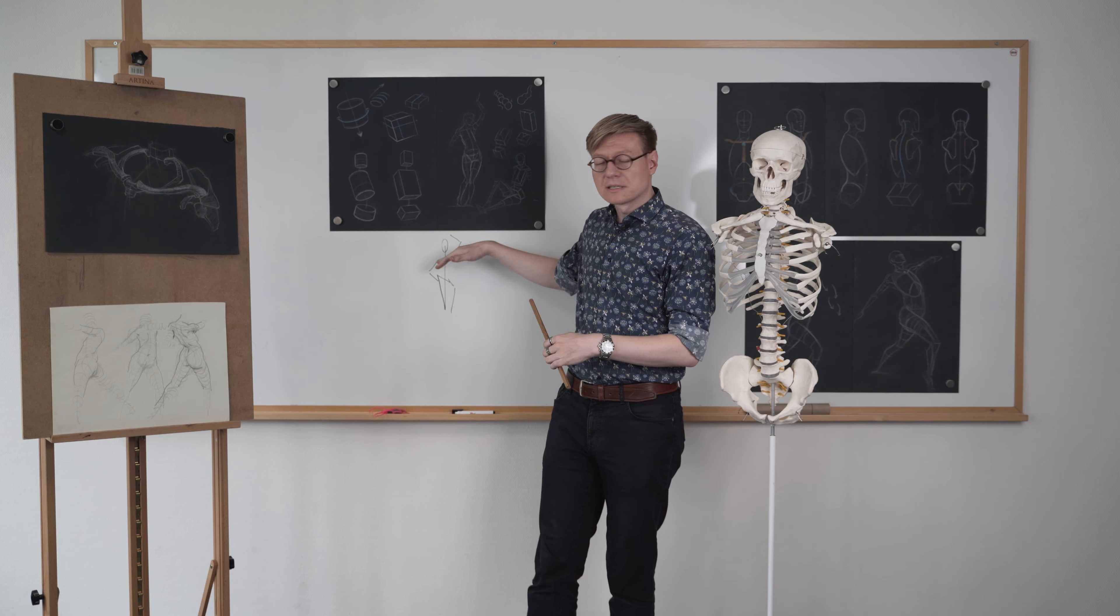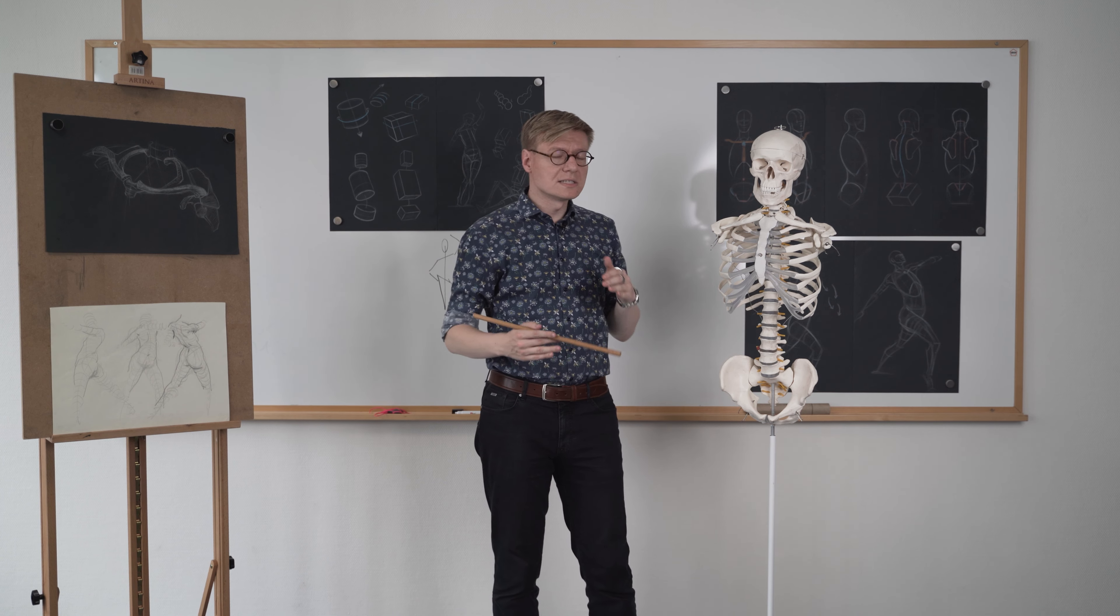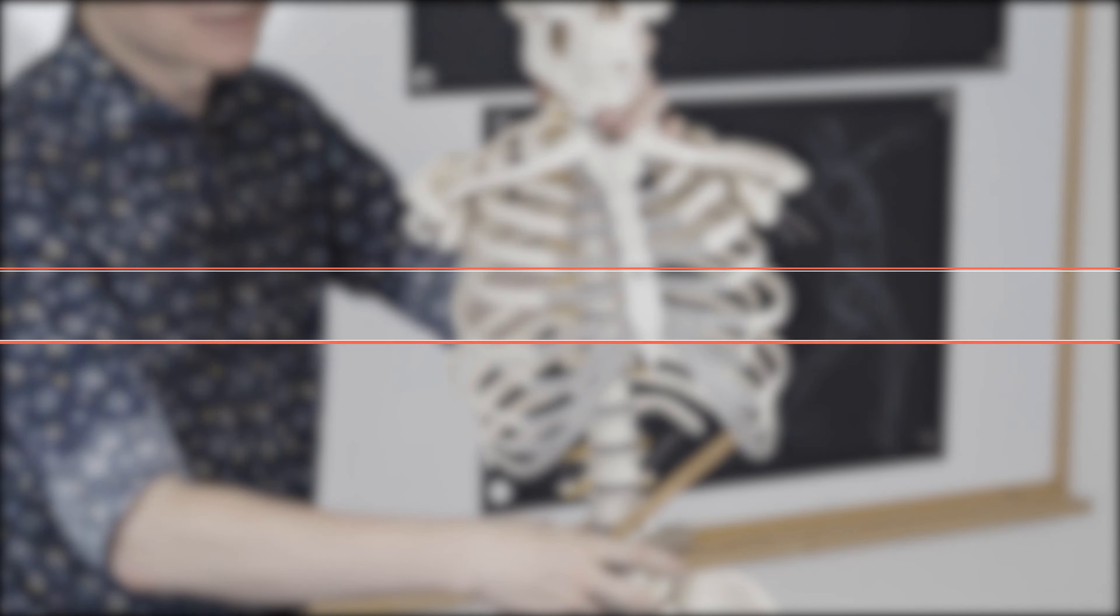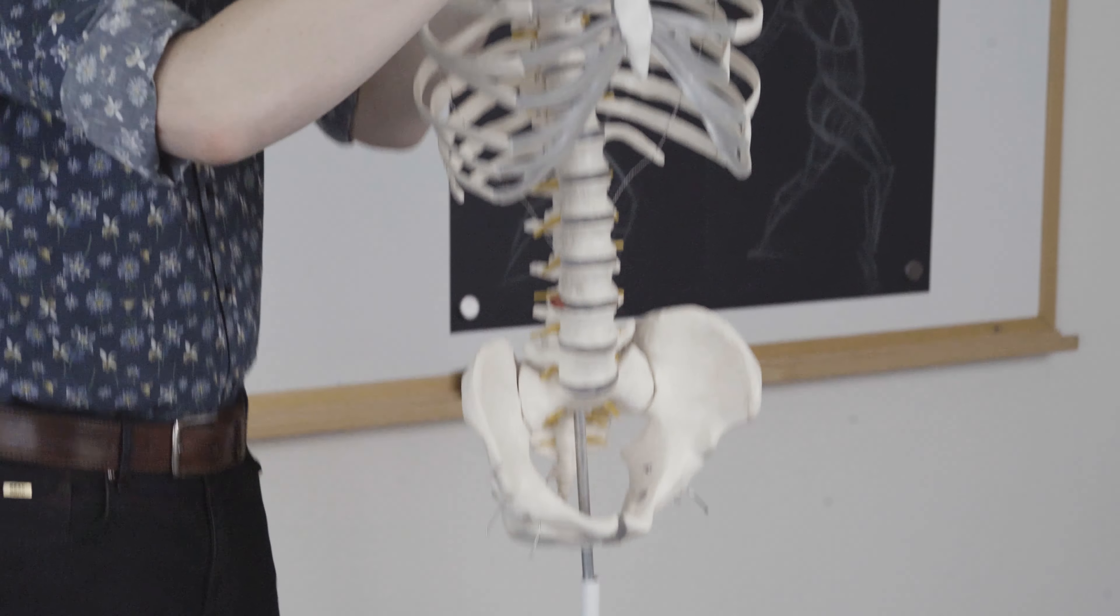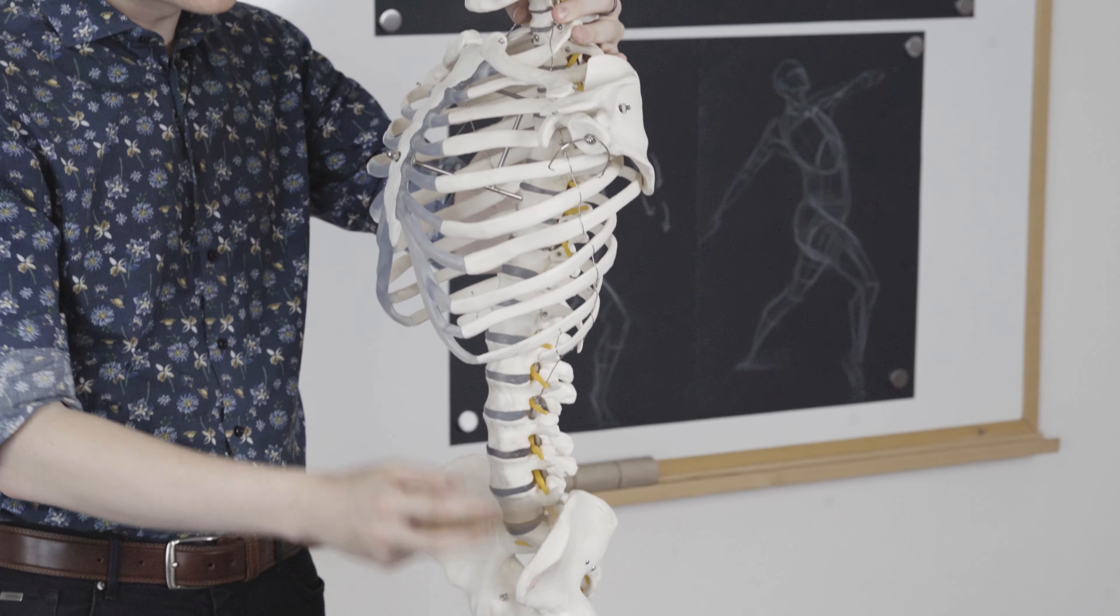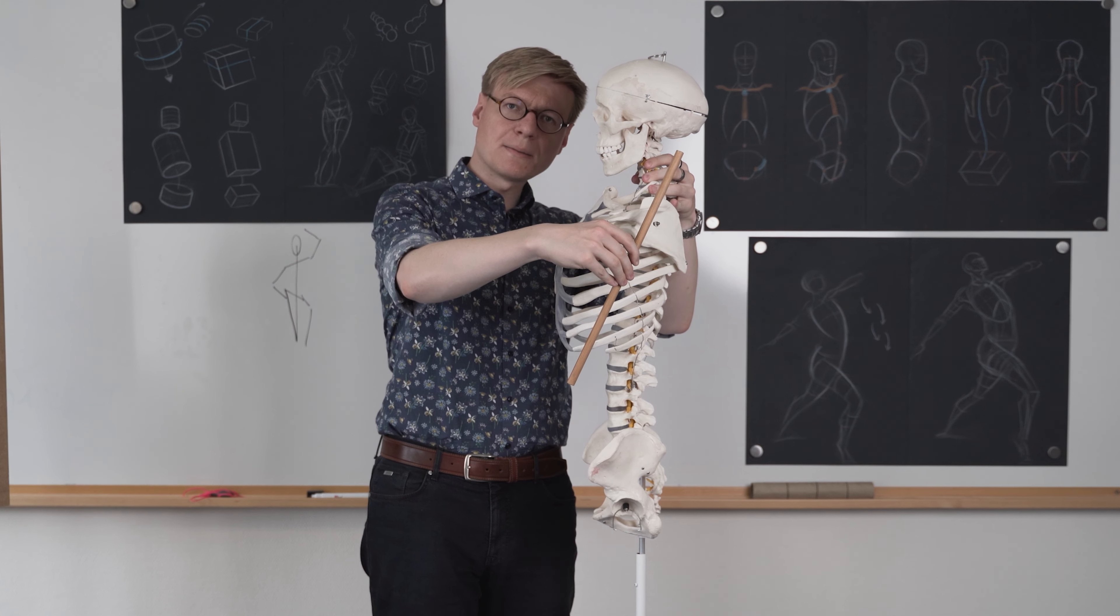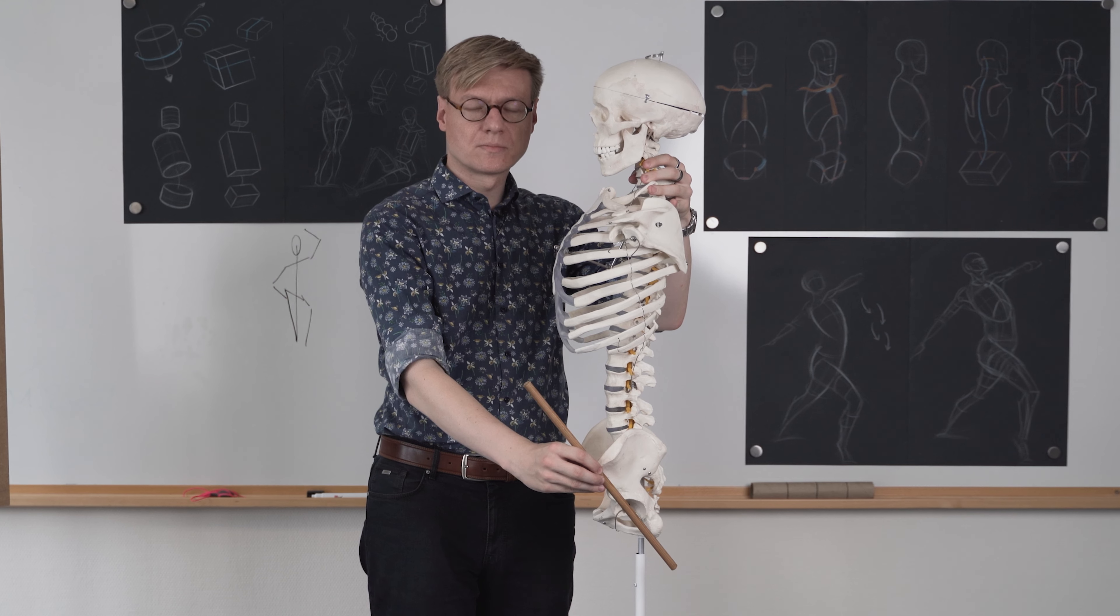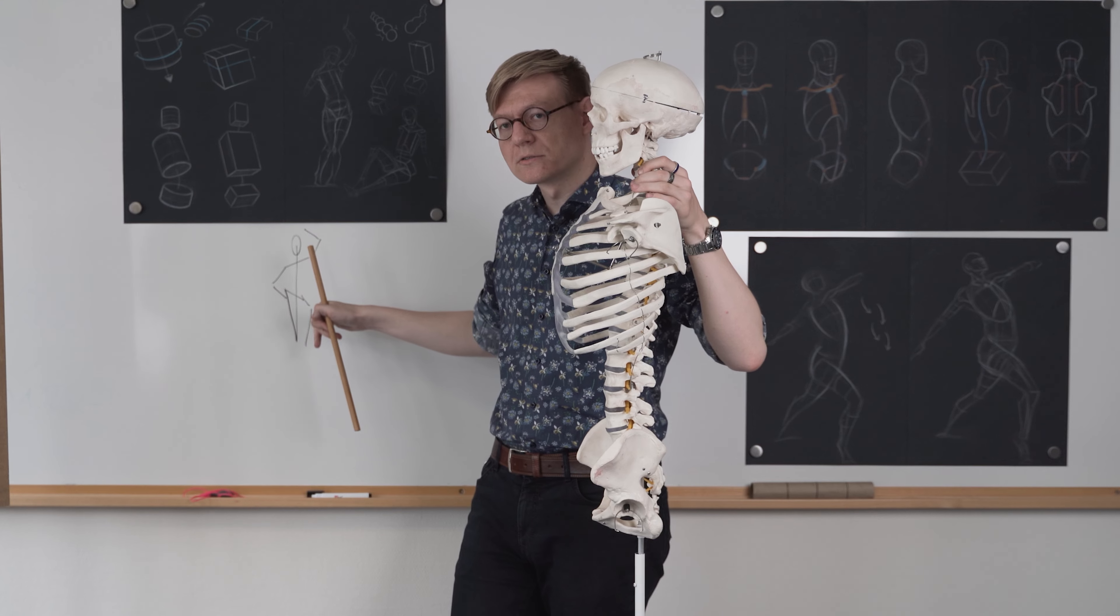Now we have observed the tilting of rib cage and pelvis in a gesture and movement of the body. This is basically our one dimensional approach. Let's think about the second dimension. If we look at our skeleton, we have just described these two planes. However, if we turn our skeleton to the side, we can observe that pelvis and rib cage also have a lean to them. The rib cage is generally leaning backwards, while the pelvis seems to be leaning forwards.